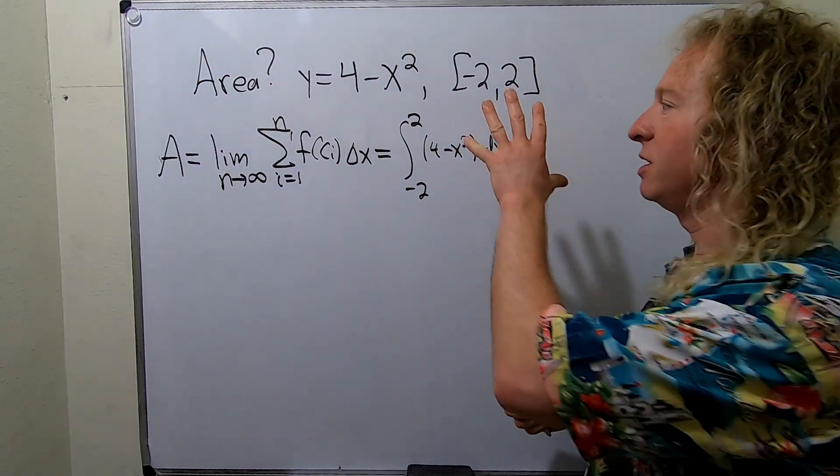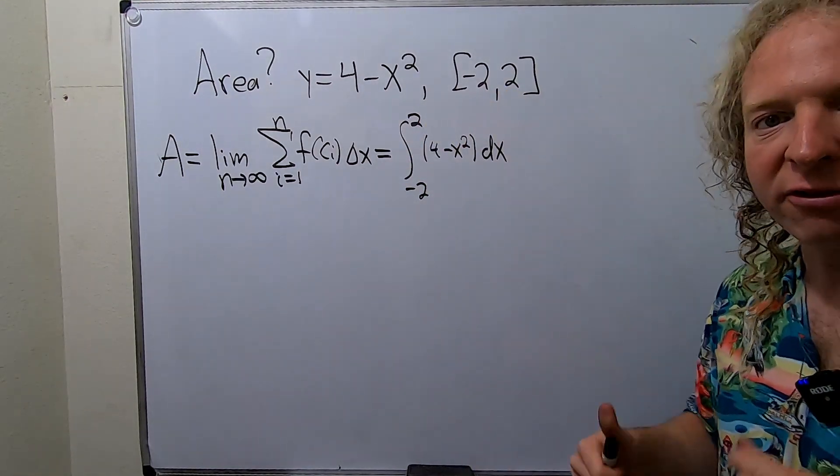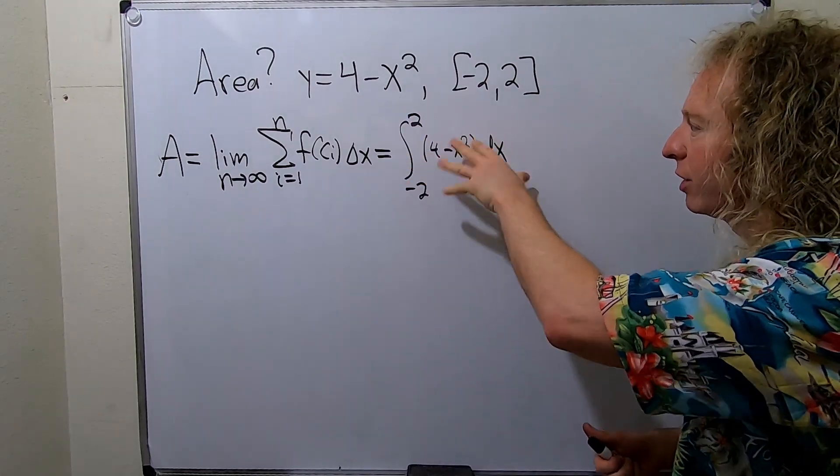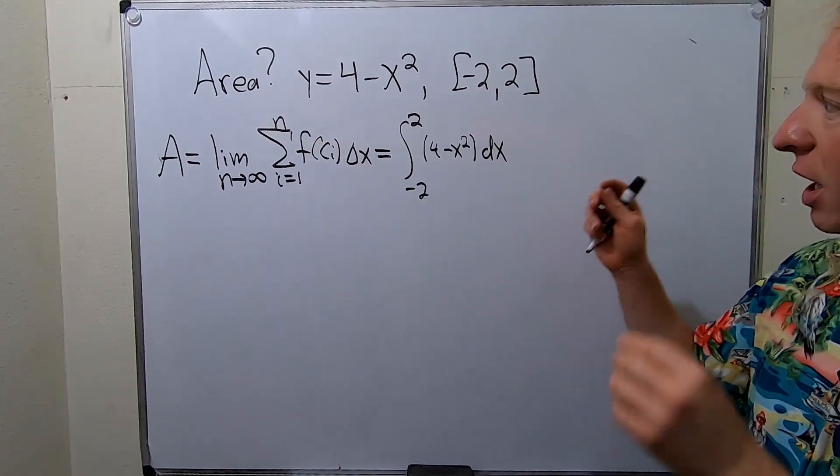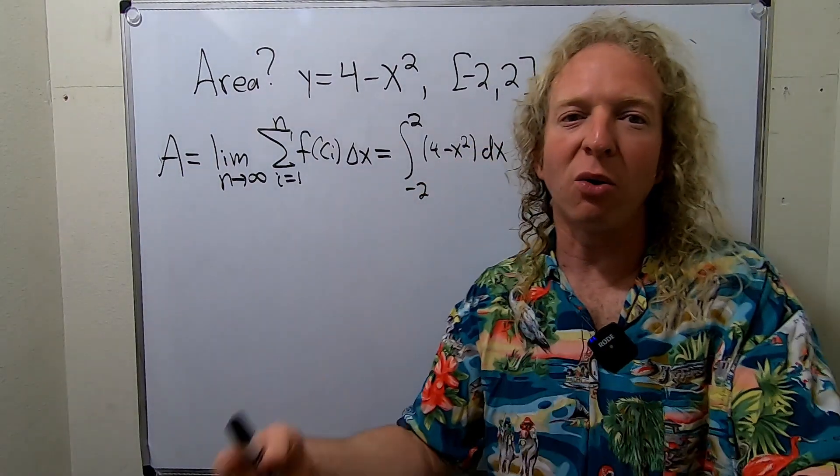So this is the easy way to do it. Once you know something called the fundamental theorem of calculus you can just work this out really quickly. You can put this into like Wolfram Alpha or a calculator and it will give you the answer. So we're basically doing things the long way.